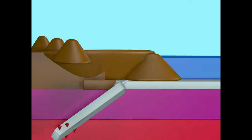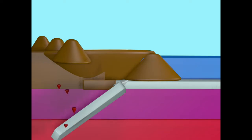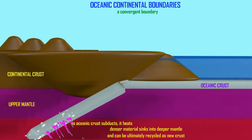As the oceanic crust subducts, it heats and this causes different materials within the crust to separate. The denser material sinks deeper into the mantle. It can ultimately be recycled,